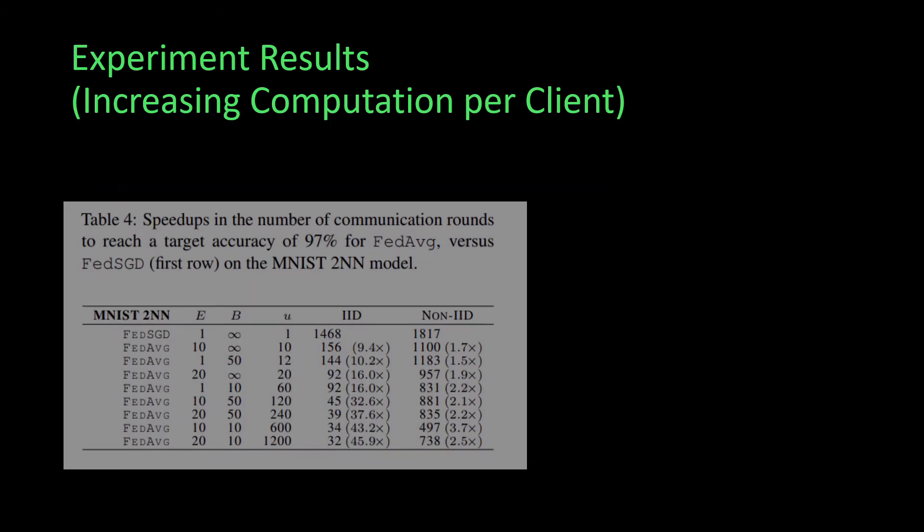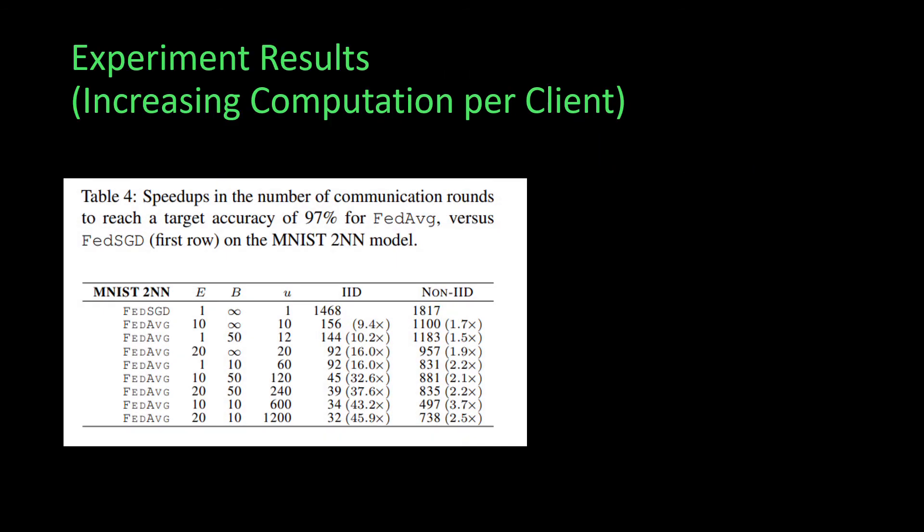Using more computation—increasing E and decreasing B—speeds up convergence time 35 times for the CNN. We can see this by checking where E equals 20 and B equals 10 in the table. The improvement in convergence time for IID dataset is substantial. Federated averaging also acts as regularization since it helped the model converge faster.